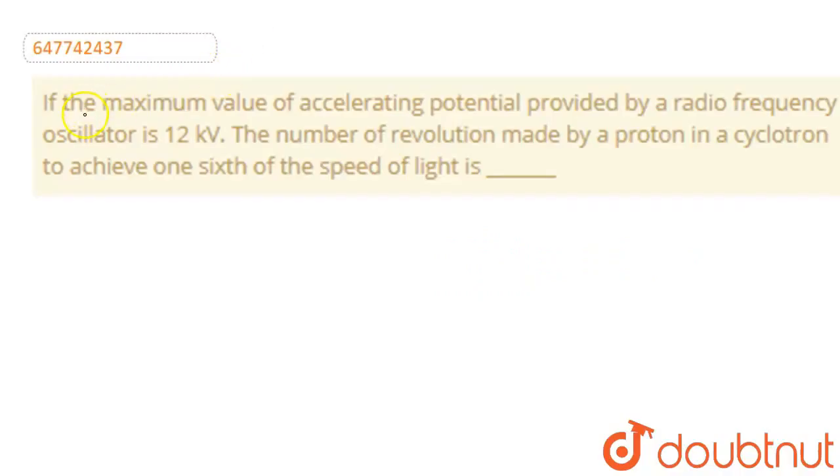Hello students, here is our question. If the maximum value of accelerating potential provided by a radio frequency oscillator is 12 kV, find the number of revolutions made by a proton in a cyclotron to achieve one-sixth the speed of light.